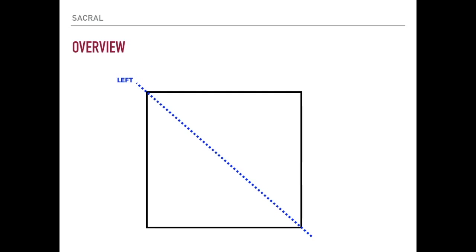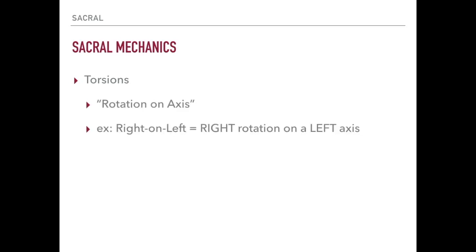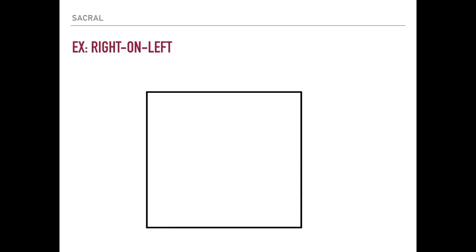We're going to talk about sacral mechanics and get into some somatic dysfunctions. When we talk about a sacral torsion, we name it for rotation on axis. For example, a right on left sacral torsion means right rotation on a left axis. It's always rotation first and then axis second. So right on left means right rotation on left axis — keep that in mind because that's how they'll be named on COMLEX.